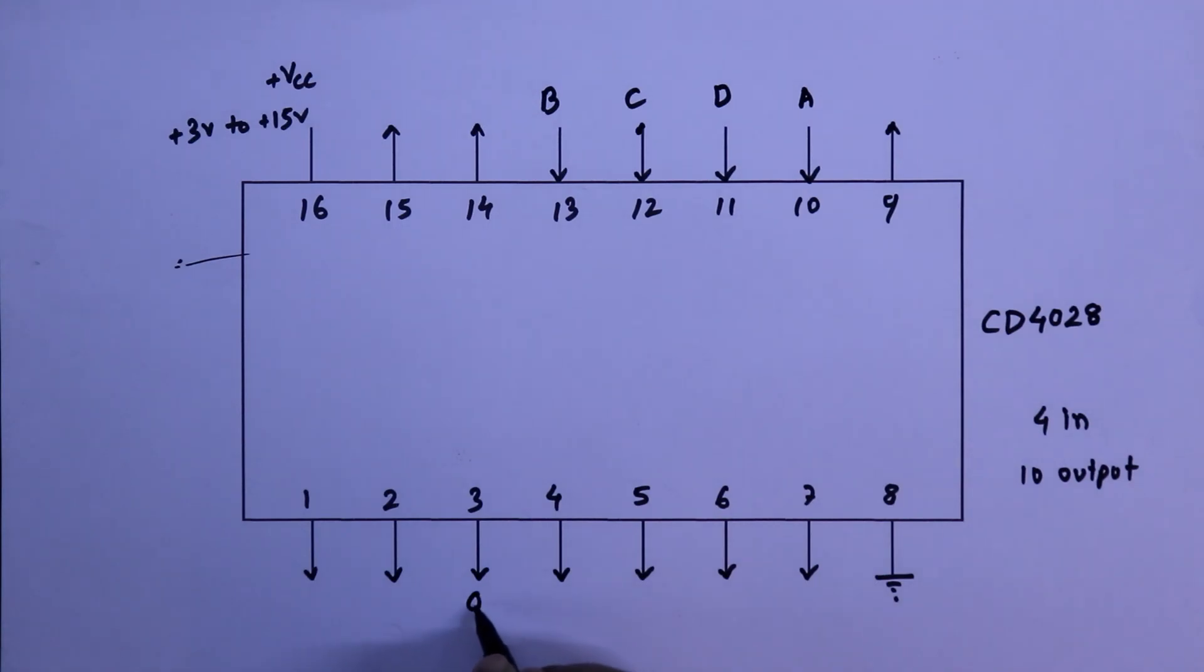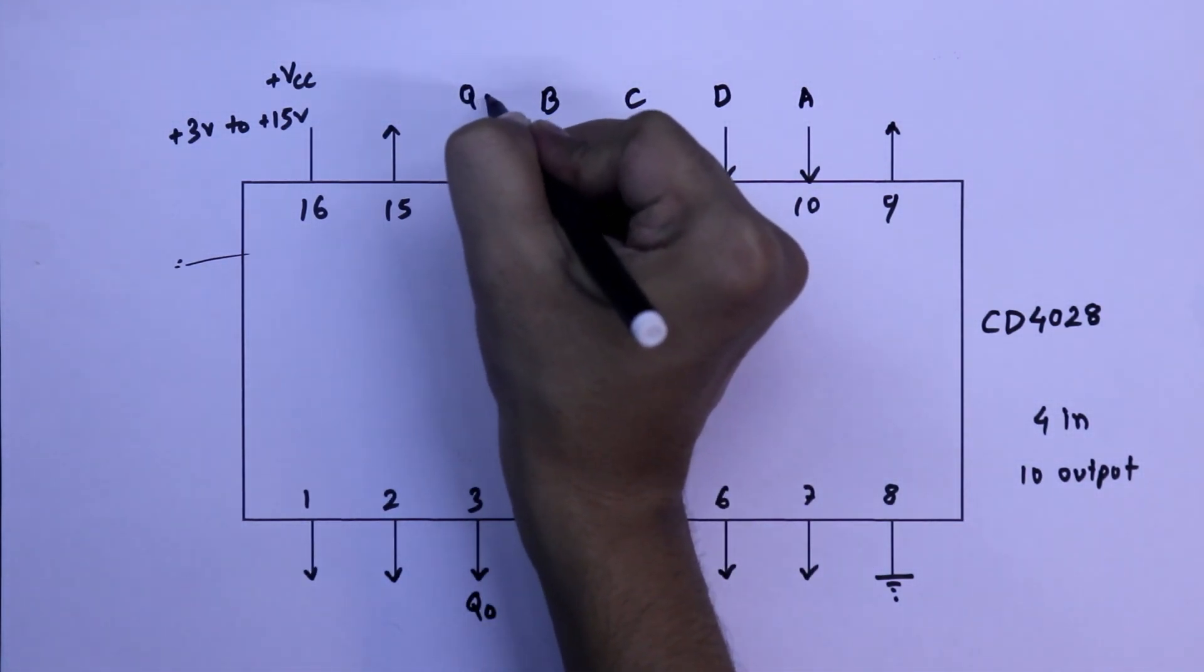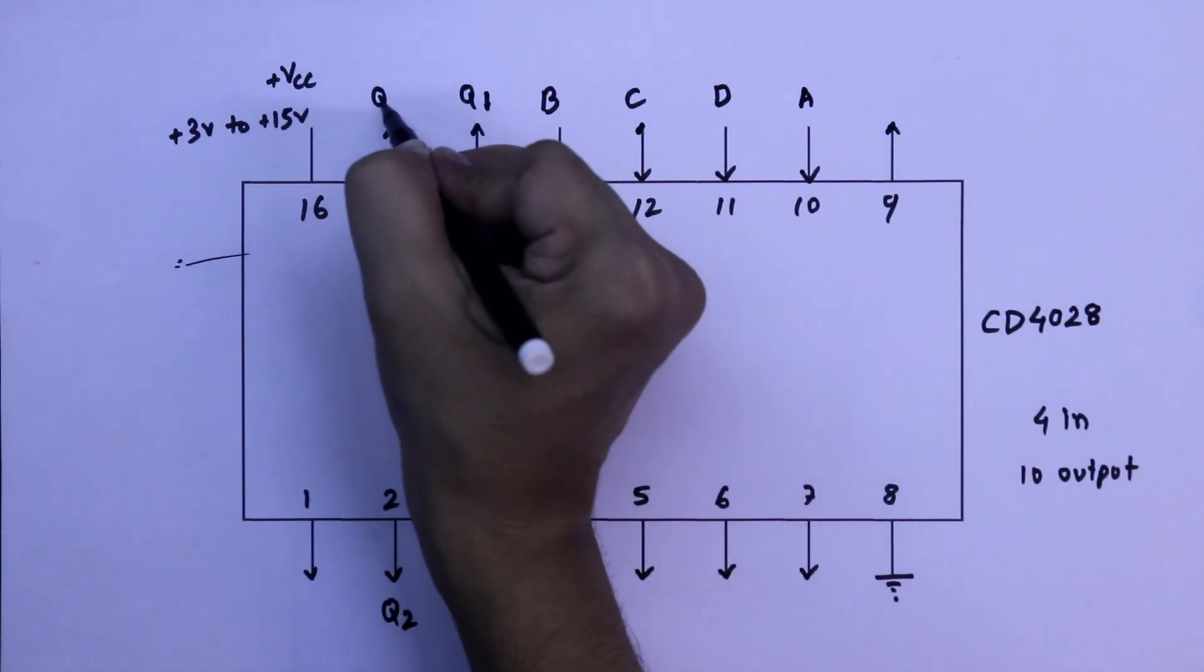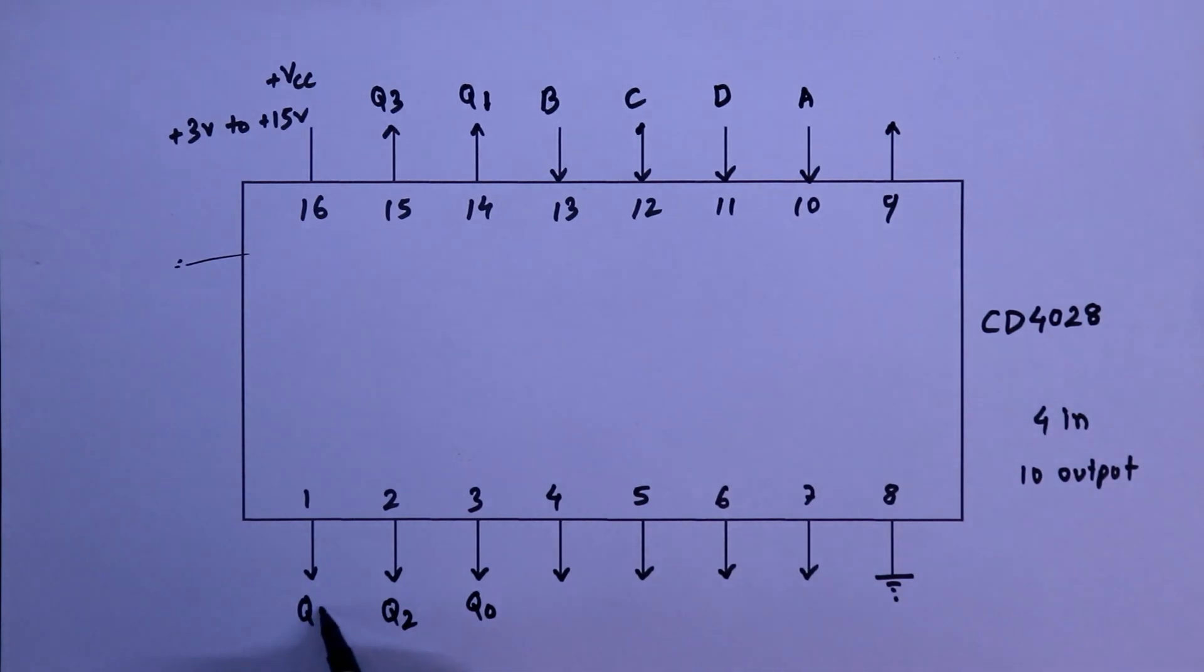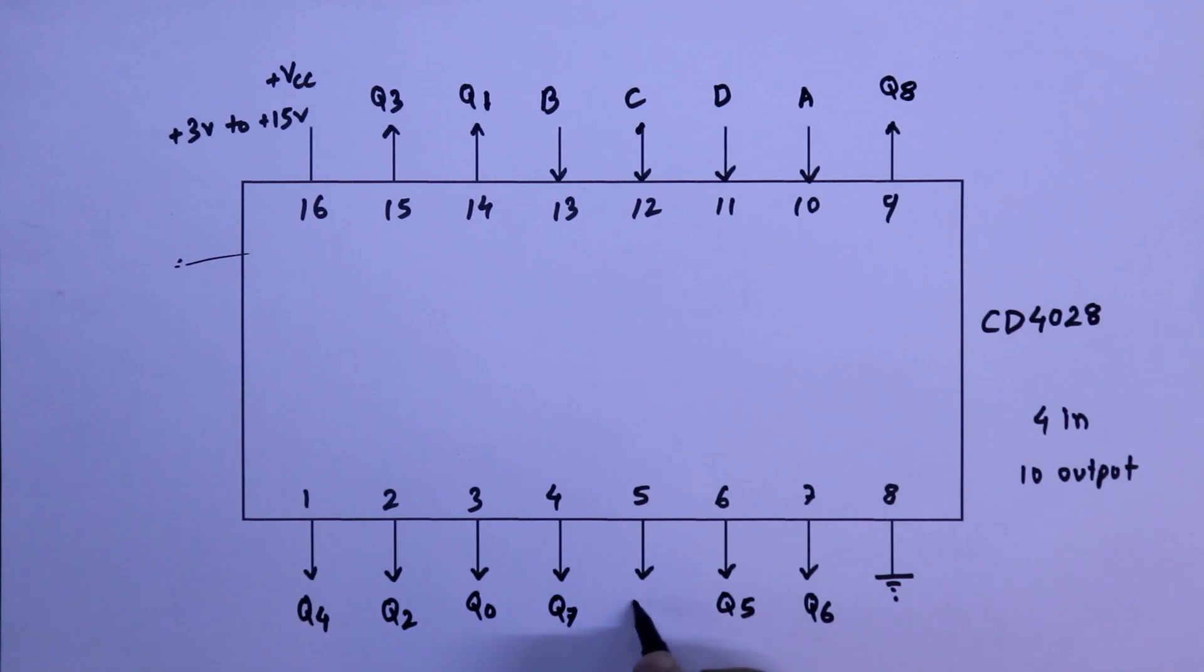And other pins are output. Pin number 3 is output 1, that is Q0, Q1, Q2, Q3, Q4, Q5, Q6, Q7, Q8, Q9. So these are the 10 outputs. Now we will see the inputs and output.